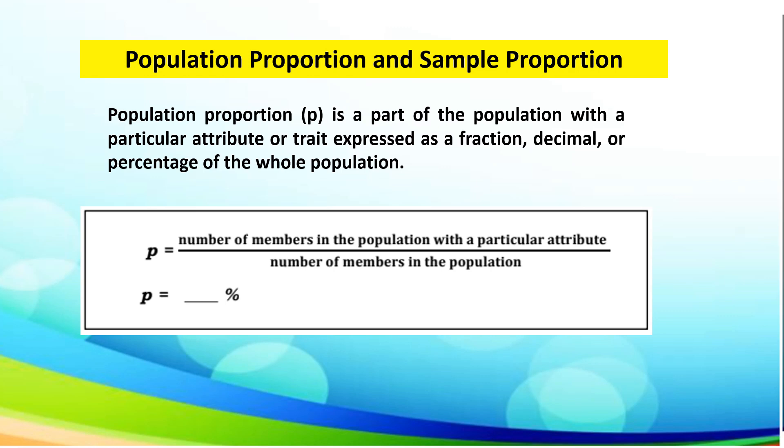Let us discuss population proportion and sample proportion. Population proportion (p) is a part of the population with a particular attribute or trait expressed as a fraction, decimal, or percentage of the whole population. We can use this formula: p equals the number of members in the population with a particular attribute over the number of members in the population. It always expresses a percentage and can be converted into decimal.